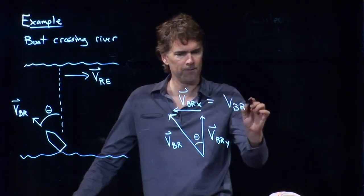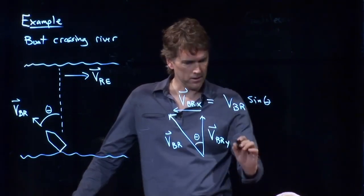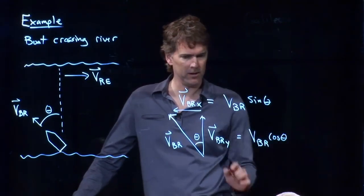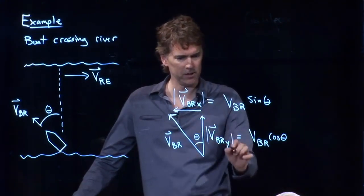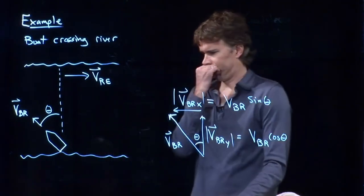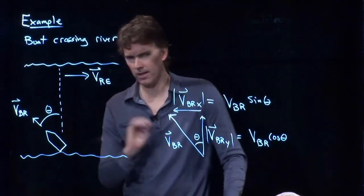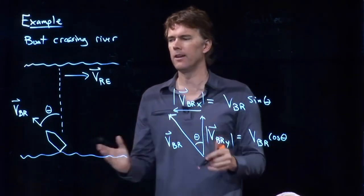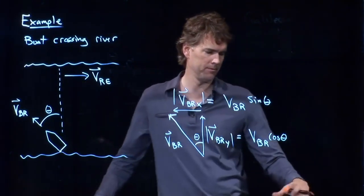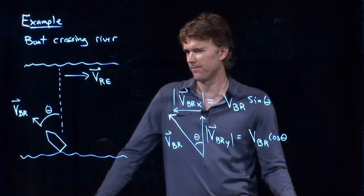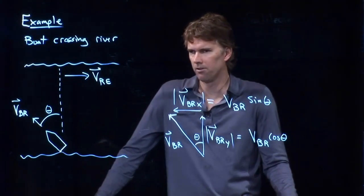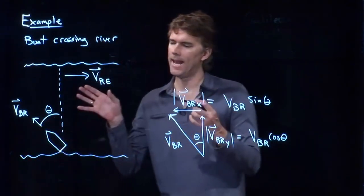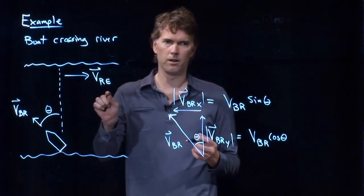So this is VBR sine of theta. This is going to be VBR cosine of theta. And if we're just thinking about the speeds there, we can go like that. All right. If I'm pointing this thing slightly upstream, then my component here upstream has to be what if I'm going to end up moving straight across the river? It has to be exactly the speed of the river, right? Whatever component of the velocity of the boat going upstream, that has to exactly match the component of the river going downstream.